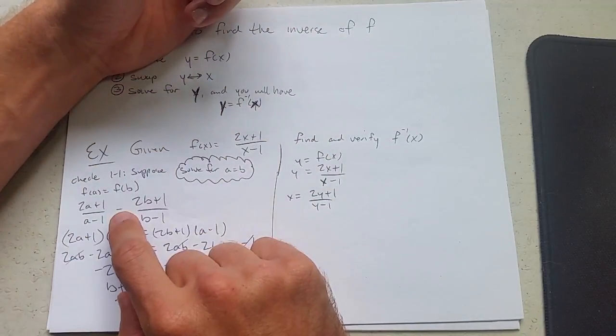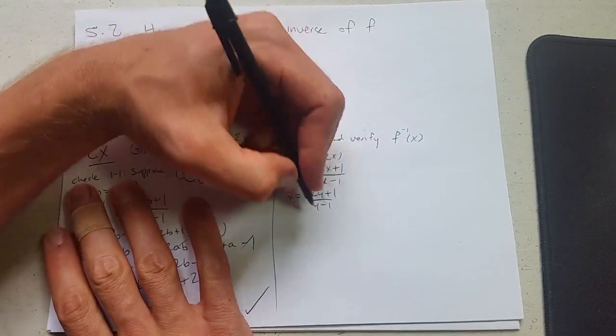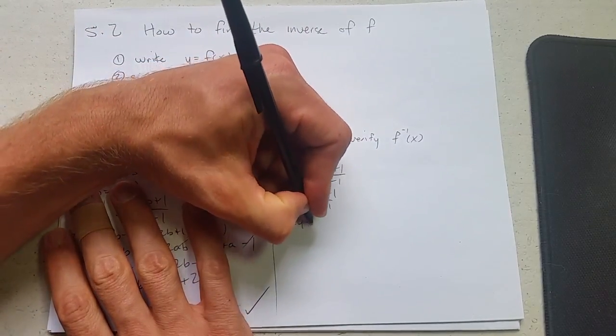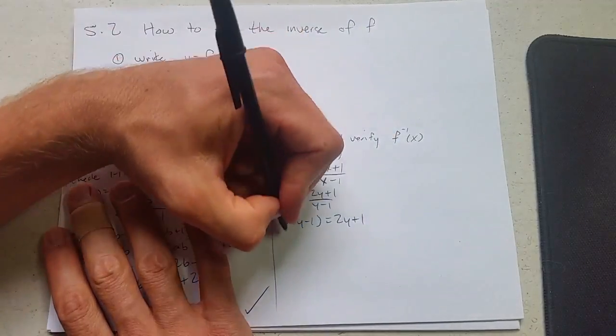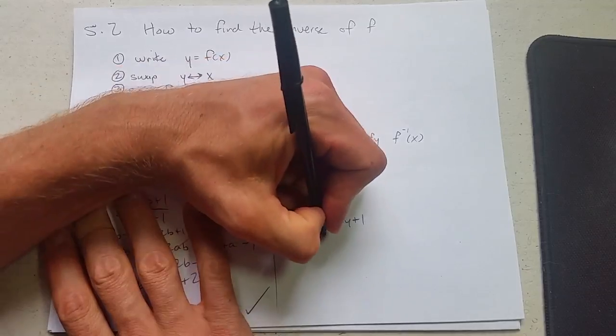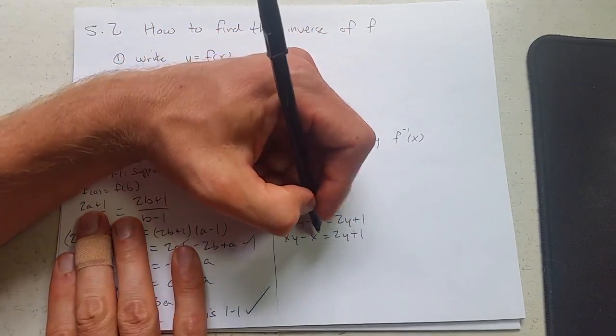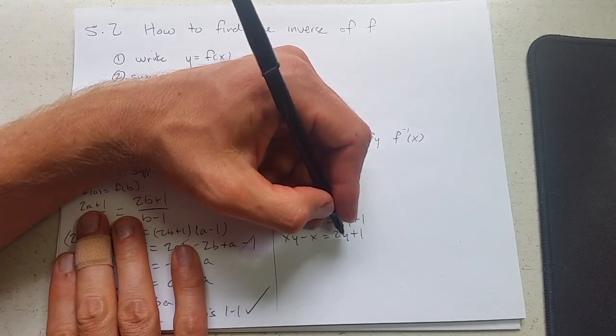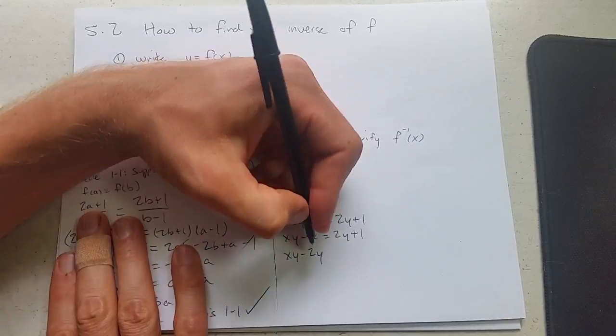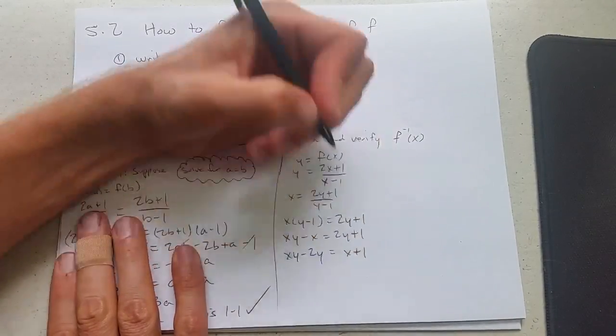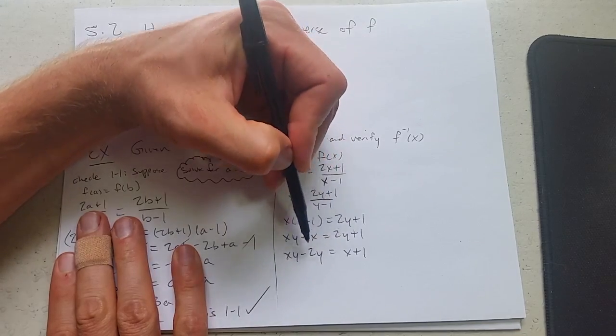Now we're trying to solve for y. Easier said than done sometimes. Fractions suck. We're going to multiply by the denominator. Distribute here. xy minus x equals 2y plus 1. All the y's on one side, all the x's on the other. Let's go. It doesn't really matter. I'll move the y's to the left. xy minus 2y equals x plus 1. I just added the x to the other side, subtracted 2y to this side.